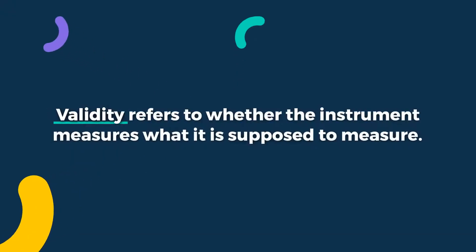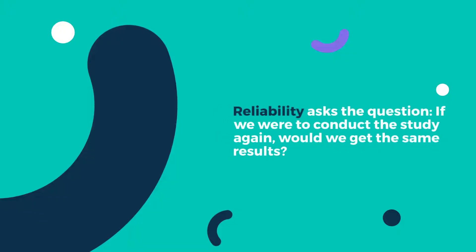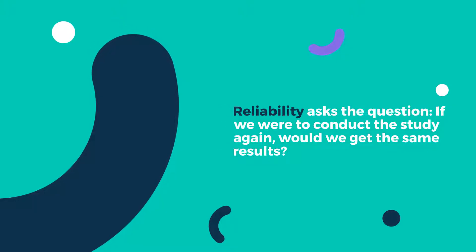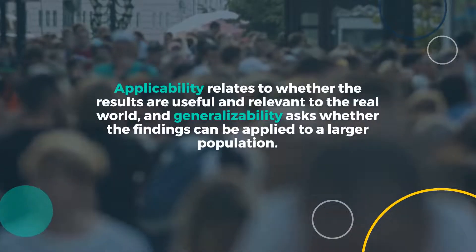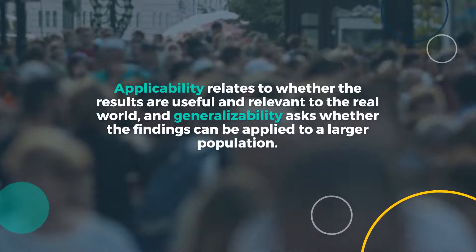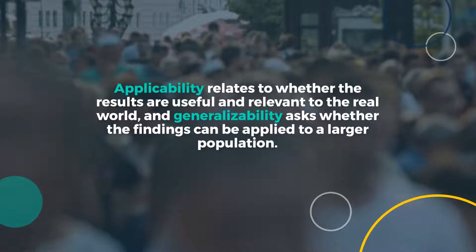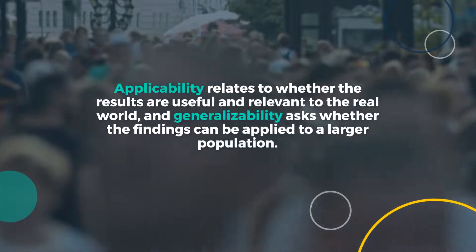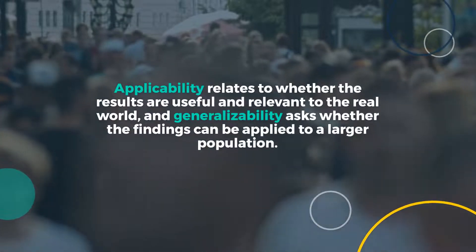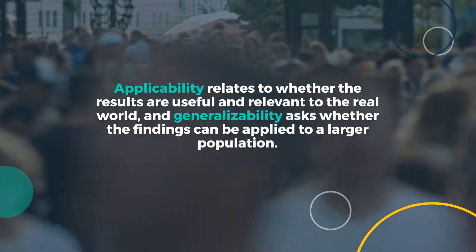Validity refers to whether the instrument measures what it is supposed to measure. Reliability asks the question: if we were to conduct the study again, would we get the same results? Applicability relates to whether the results are useful and relevant to the real world, and generalizability asks whether the findings can be applied to a larger population.